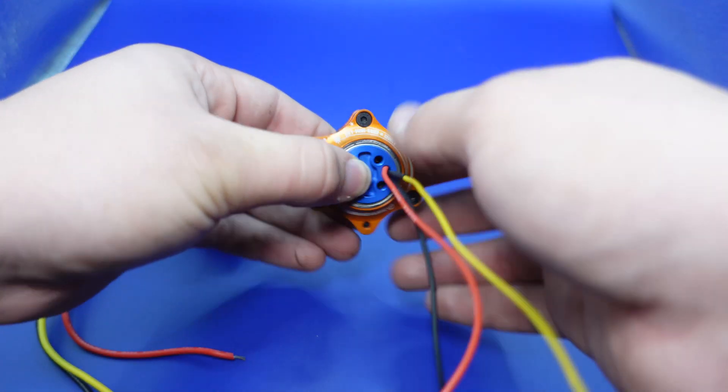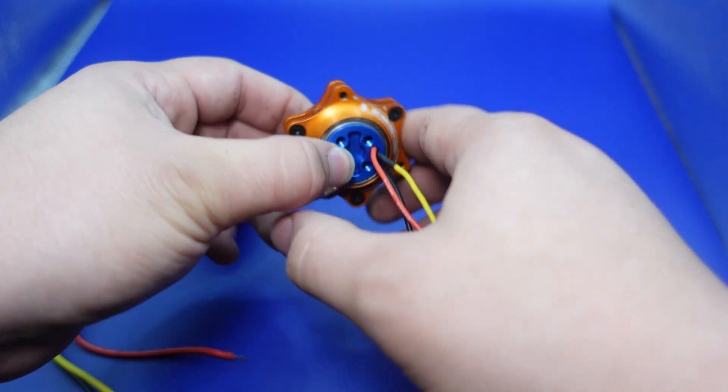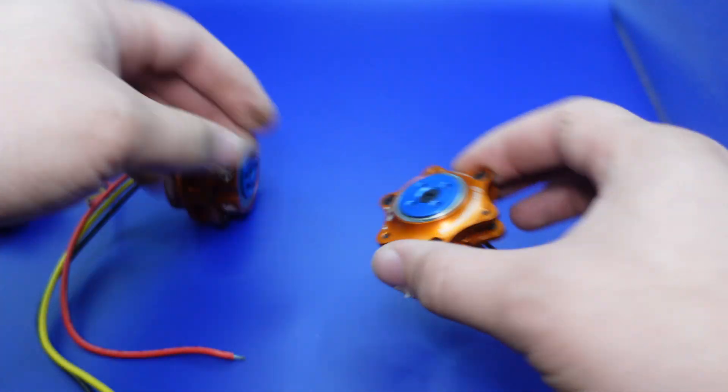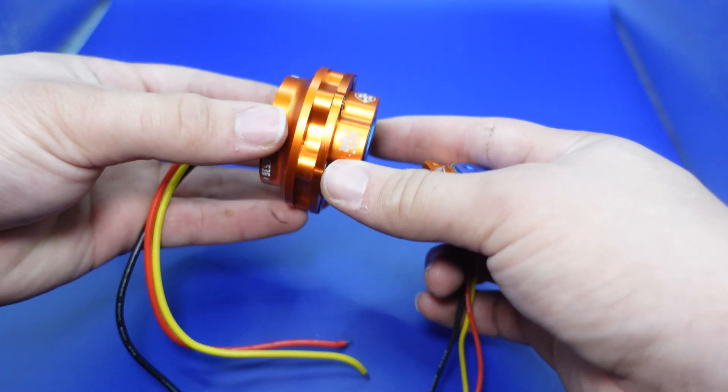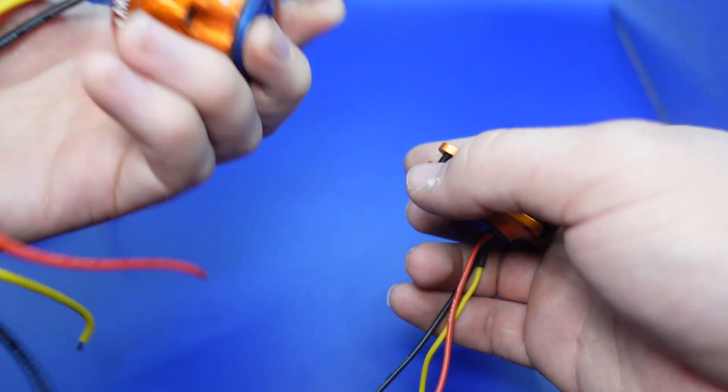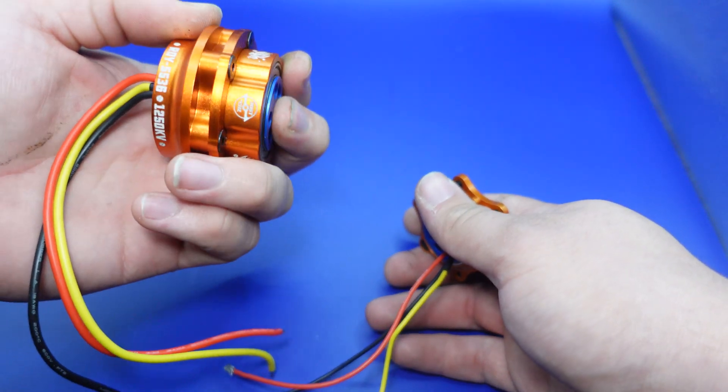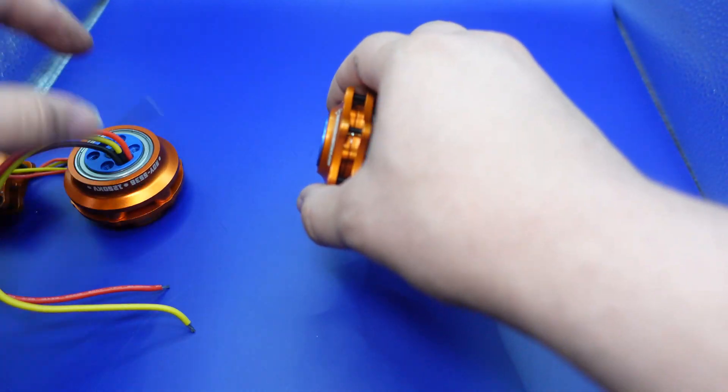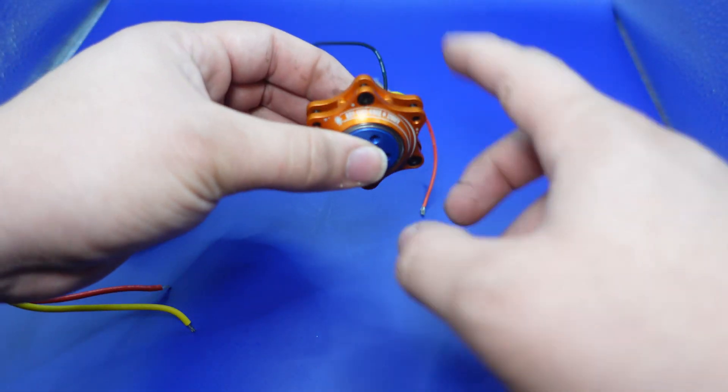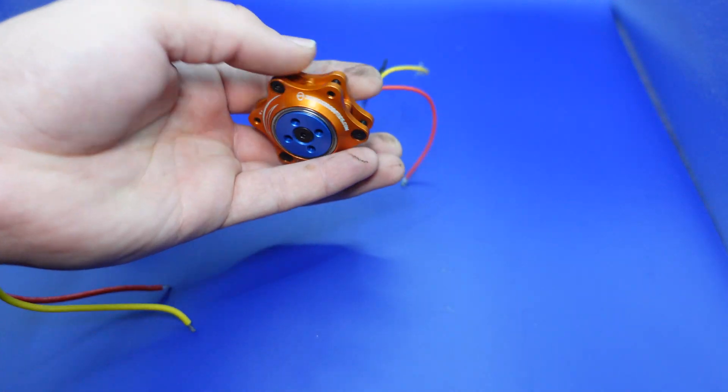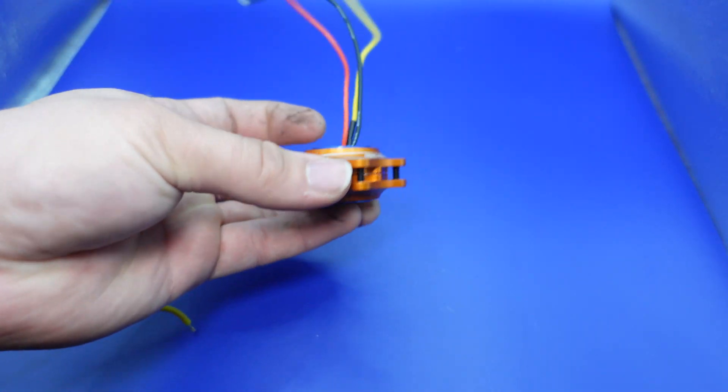And the stator size for this motor is about a 22mm by 6mm stator versus this one, which is a 28mm by 12mm stator. So this motor, really good for a Beetleweight direct drive weapon system. And this one should be really good for an Antweight direct drive weapon system for one pound robots.